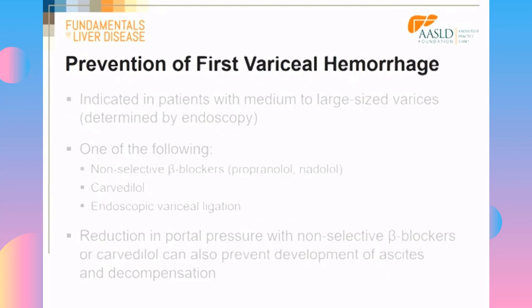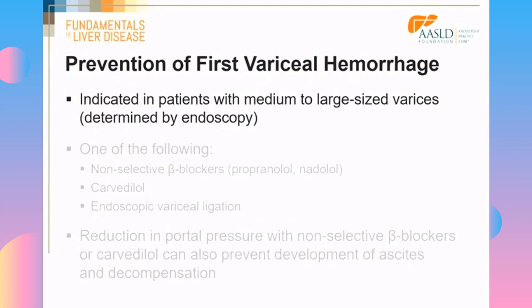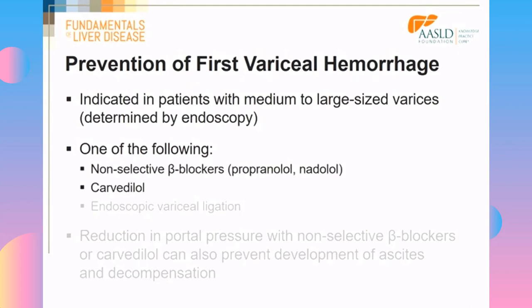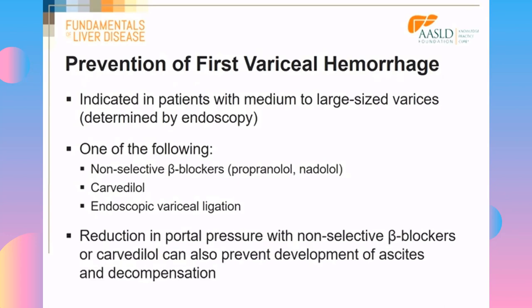Prevention of first variceal hemorrhage is indicated in patients with medium to large varices, as determined by endoscopy. You must use one of the following: traditional non-selective beta blockers like propranolol or nadolol, carvedilol, or endoscopic variceal ligation. Importantly, non-selective beta blockers and carvedilol can reduce portal pressure and prevent development of ascites and decompensation, whereas ligation is only a local therapy that will not prevent decompensation.